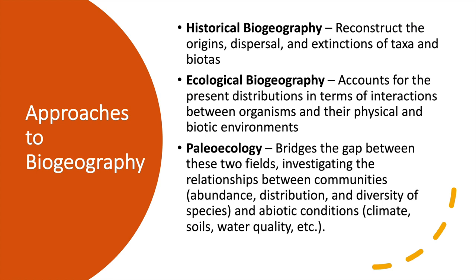Ecological biogeography accounts for the present distribution in terms of the interaction between organisms and the physical environment. Through that interaction we can see changes or patterns in the distribution of organisms. It bridges the gap between fields by investigating the relationship between communities and abiotic conditions — checking abundance, distribution, and diversity in relation to climate, soil, and physical factors.